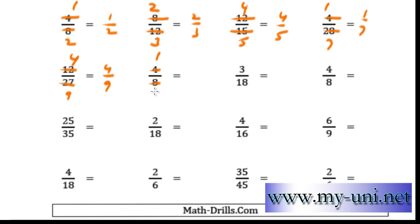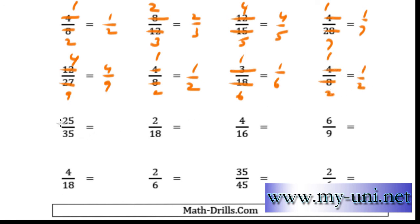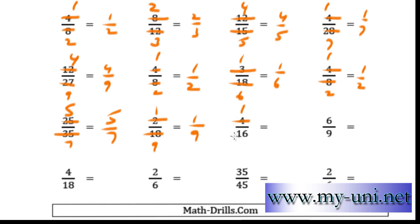4 times 1 is 4 and 4 times 2 is 8, so 1 over 2 is the answer. 5 times 5 is 25 and 5 times 7 is 35, so 5 over 7. 2 times 1 is 2 and 2 times 9 is 18, so 1 over 9 is the answer. Then 4 times 1 is 4 and 4 times 4 is 16, giving 1 over 4.